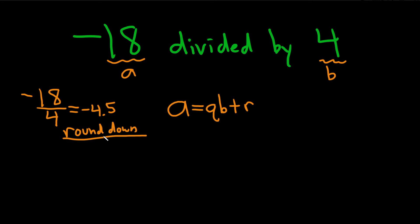So you're rounding down negative 4.5. So if you round it down, you get negative 5, and that's your quotient. I'm going to put this in a beautiful box.